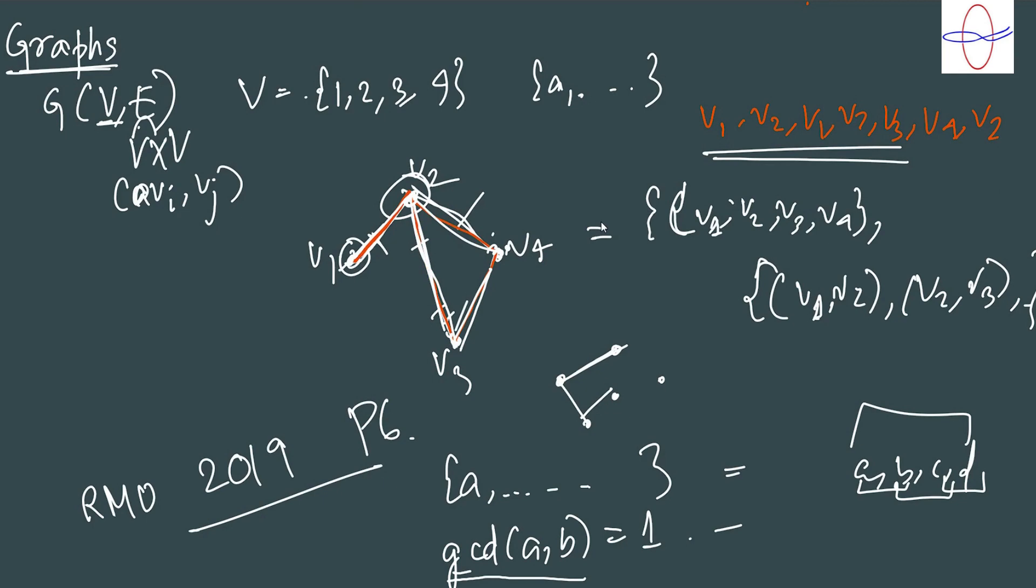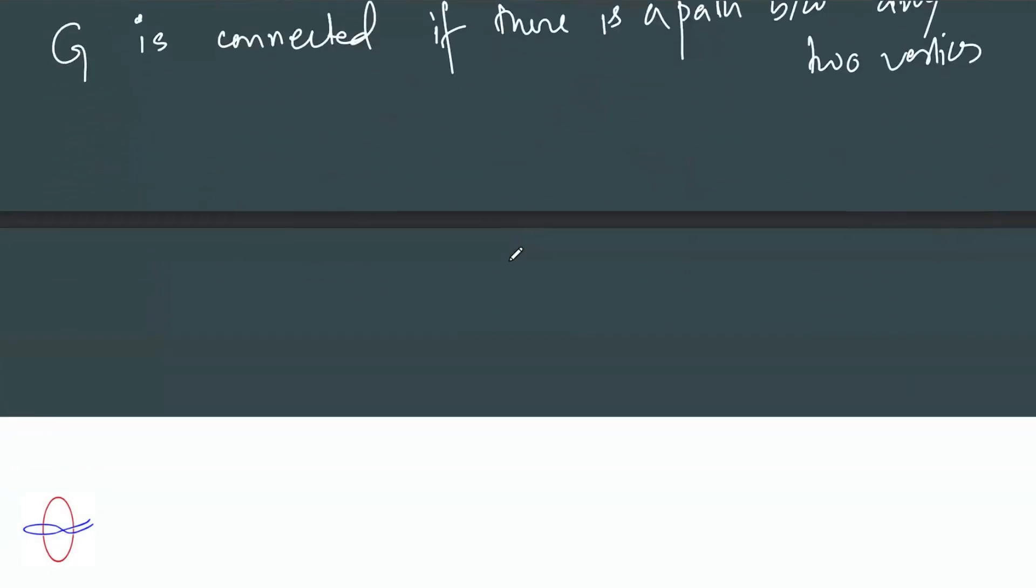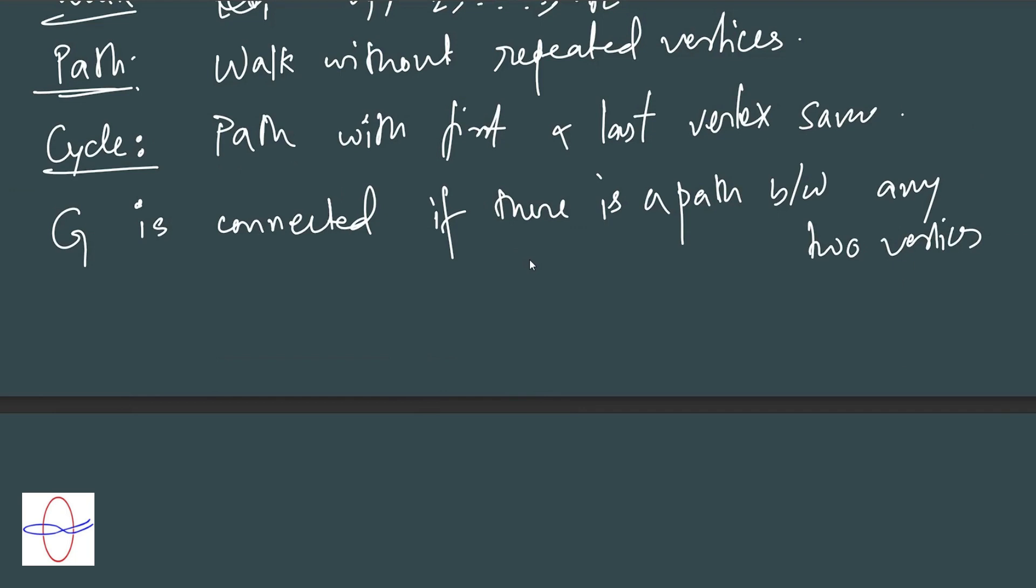However, if we actually do add v5, now it's no longer connected. There is no path between v5 and, say, v3. This is no longer connected. We call a connected graph without a cycle a tree.